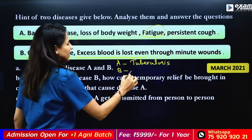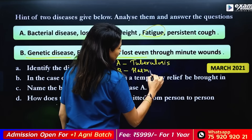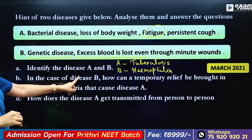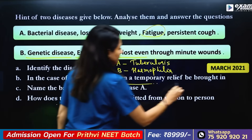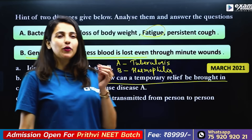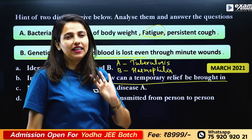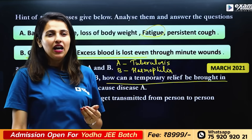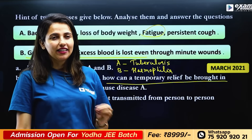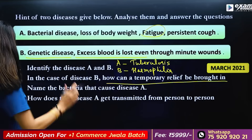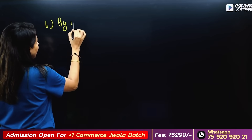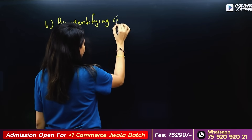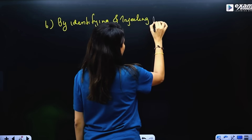In the case of disease B, how can temporary relief be brought? We cannot cut any protein. By identifying and injecting the deficient protein, temporary relief can be brought.